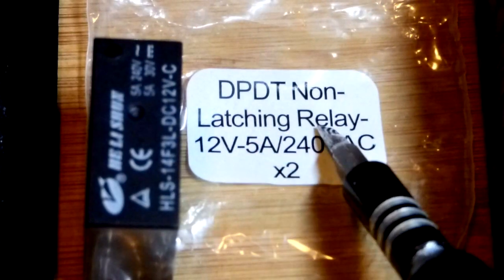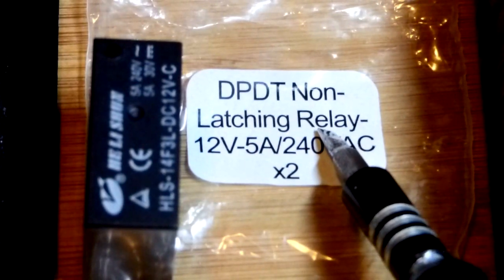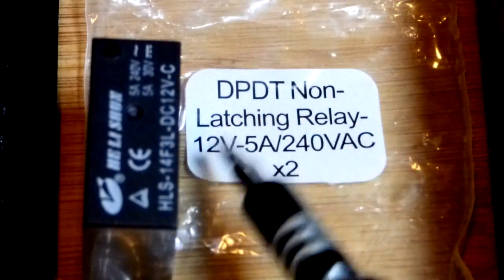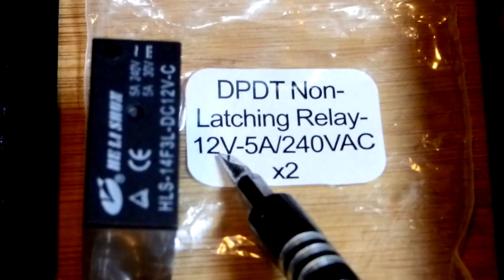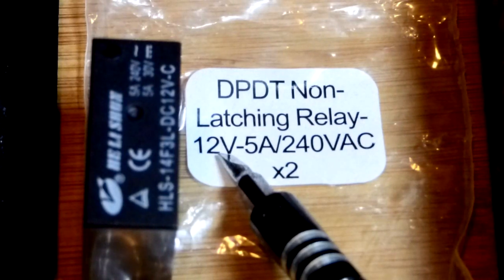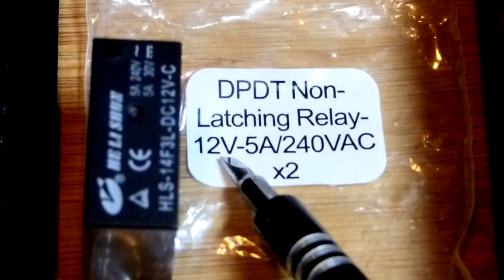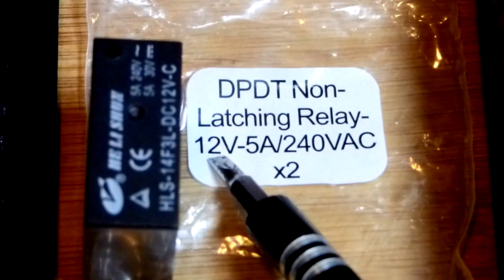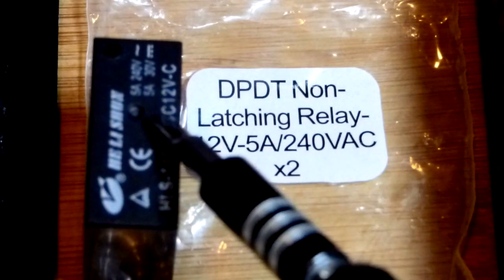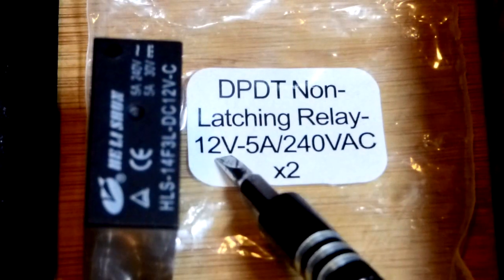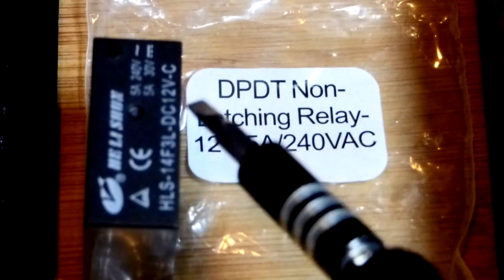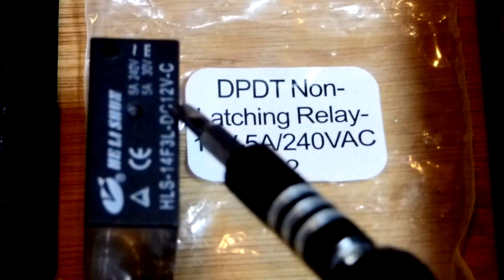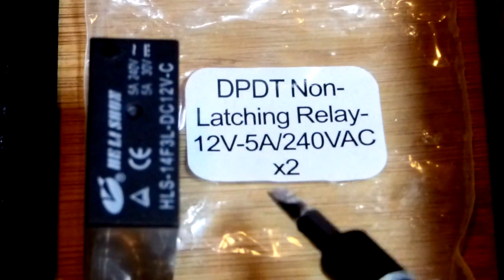So it's a non-latching relay. The switch is in one position until you energize the coil, then it goes into the other position. Once you release energy from the coil it flips back to its normal state. So you just apply 12 volts to the coil, it limits current from there. This particular one is a 12 volt. Other relays have a different control voltage and usually the voltage is marked somewhere about right there.